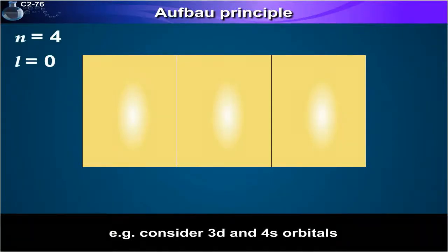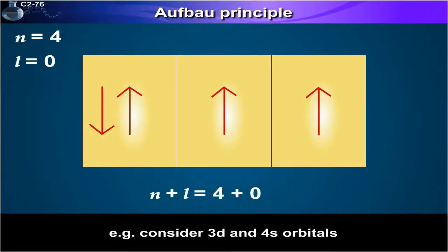For 4s, n is equal to 4 and l is equal to 0. Hence n plus l is equal to 4 plus 0 is equal to 4.